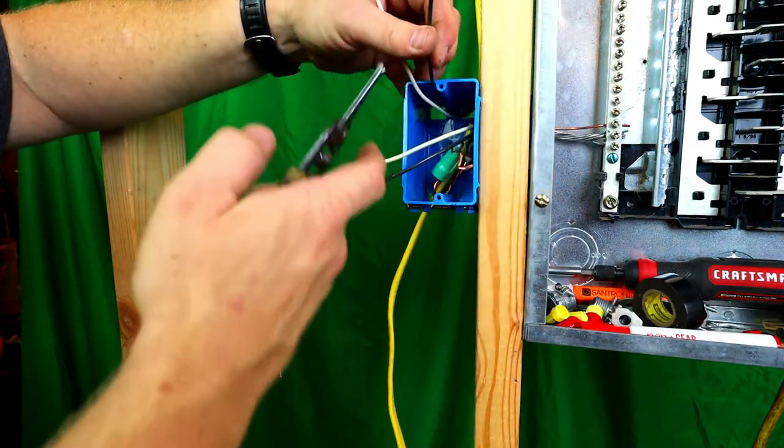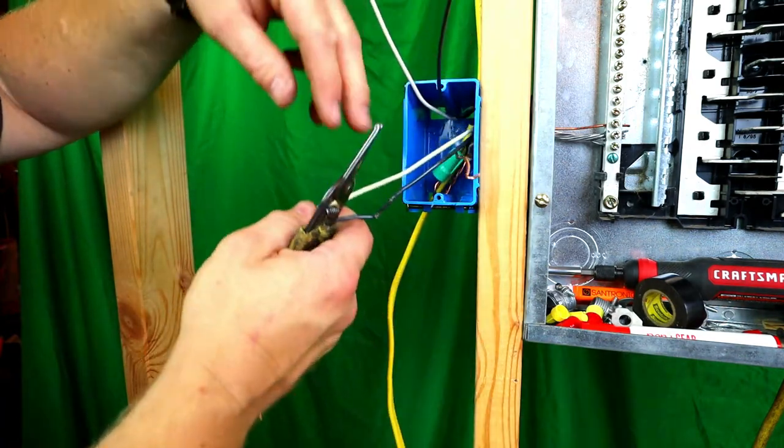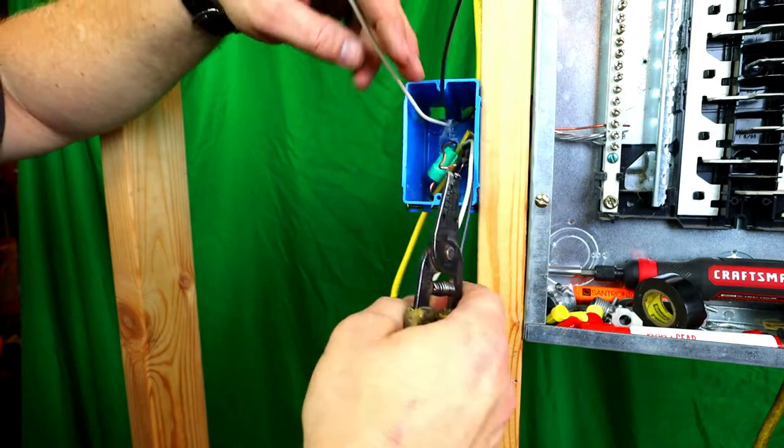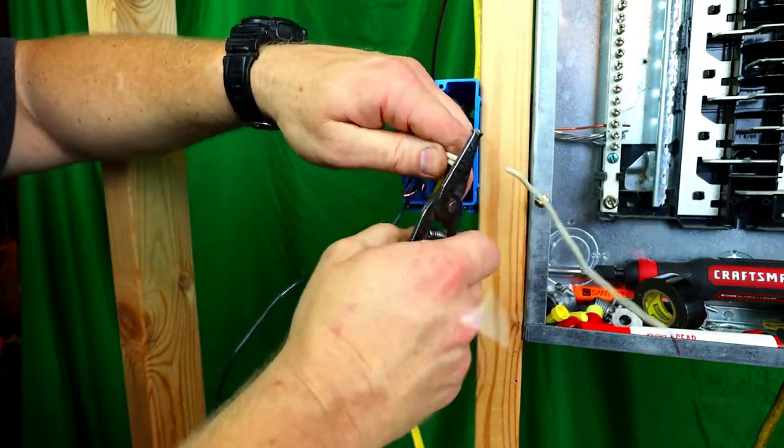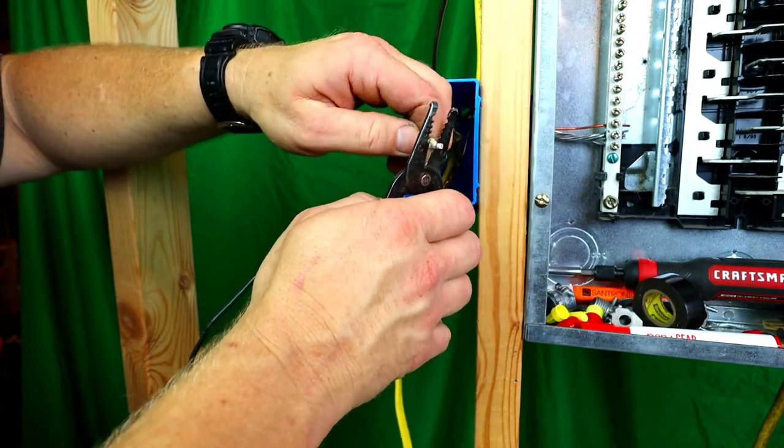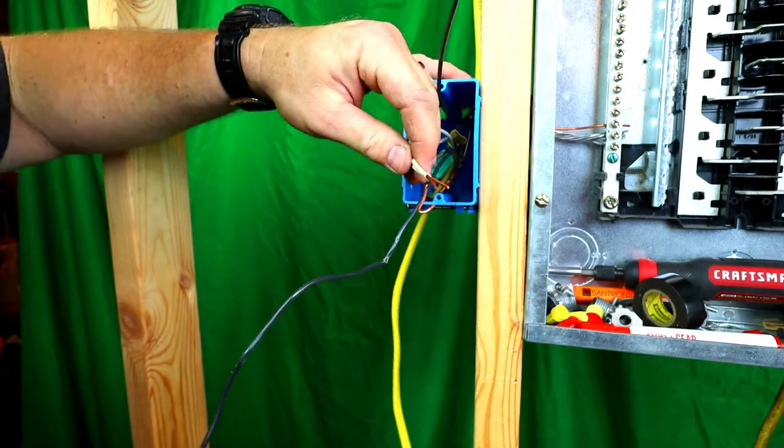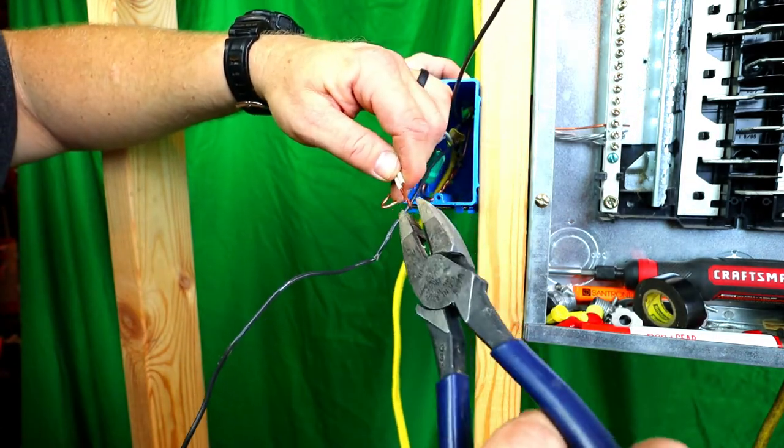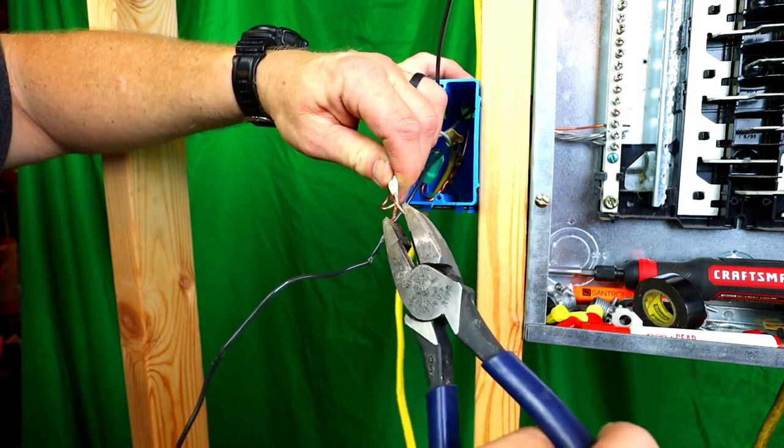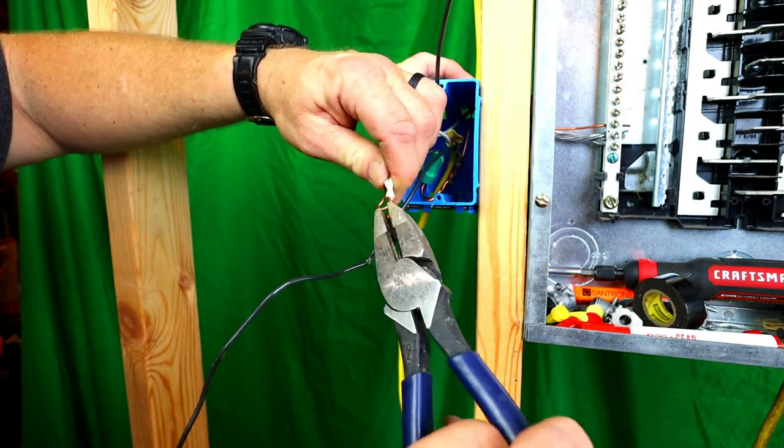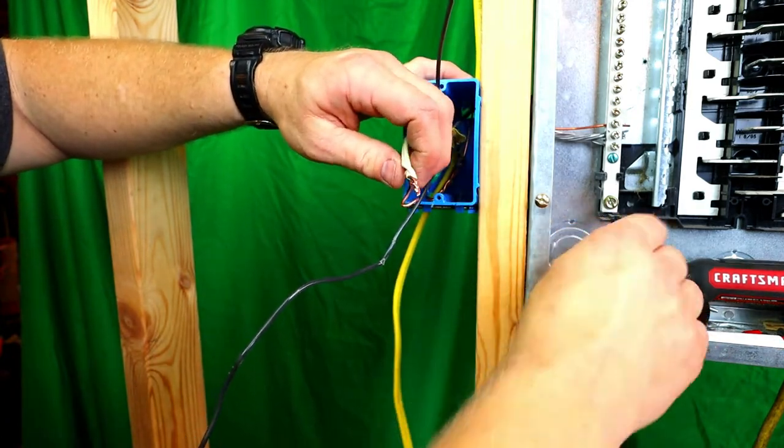Now, what we're left with is a white and a black going up and a white and a black coming from home. So what we need to do is take our whites next because these will just go straight through because this is literally now the neutral. So we'll take our dual strippers. We will twist these. Because we always want to twist.